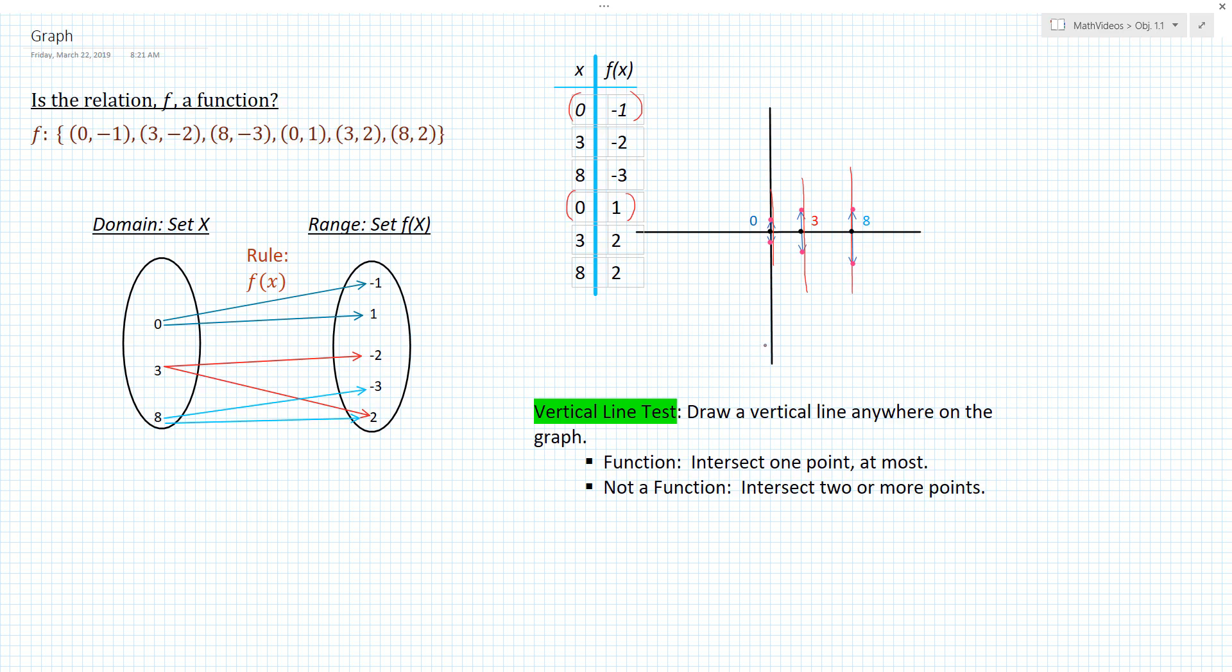However, if you had a graph where you drew a vertical line and you only hit at most one point, then we would call that graph a function, a representation of a function.